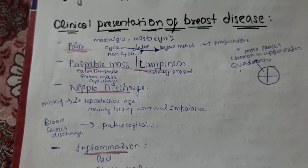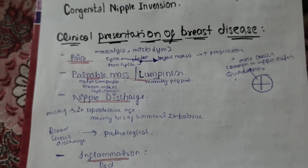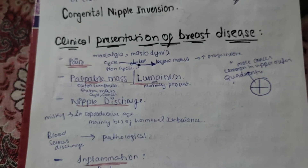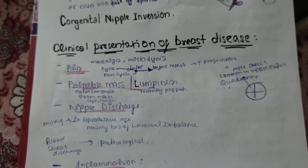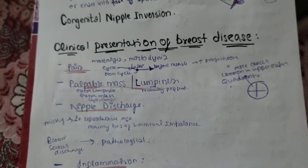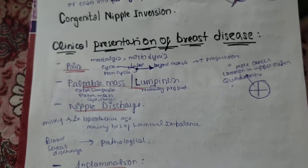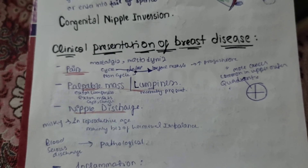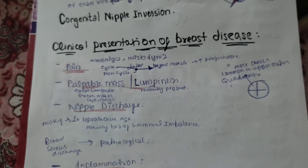Next we have palpable masses or lumpiness. The breast is already lumpy due to the presence of ducts, glands, and acini, but if you feel an excessive amount of lumpiness beyond normal, that is considered a certain kind of pathology.